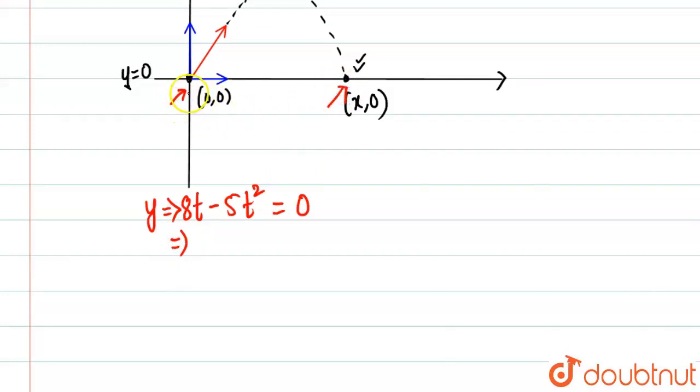This is basically t = 0 at the start of the thing, and this is basically the end of flight. So we'll have t as common and we'll have 8 - 5t = 0.